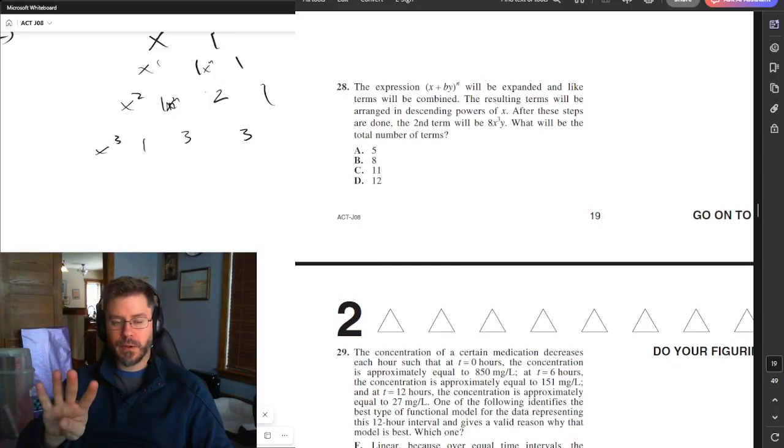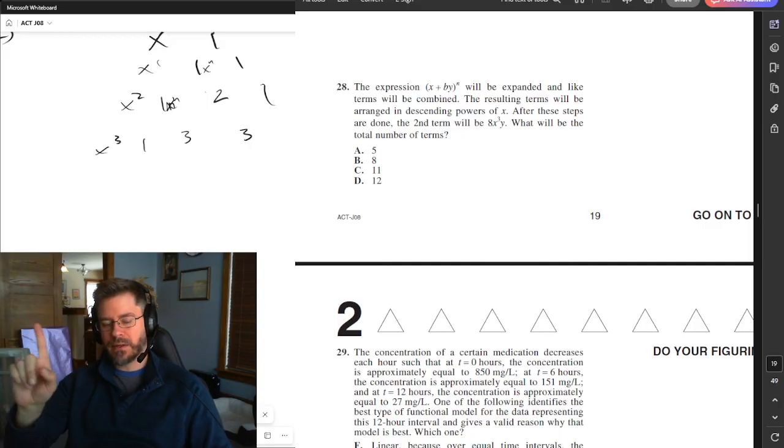Because the first term will be x to the fourth. And then the next one will be x cubed. And then your powers of y increase from 0 to n. And so x to the fourth is going to be 1, 4, 6, 4, 1. So we're here. And that's x to the fourth. And so the total number of terms, 1, 2, 3, 4, 5 terms.